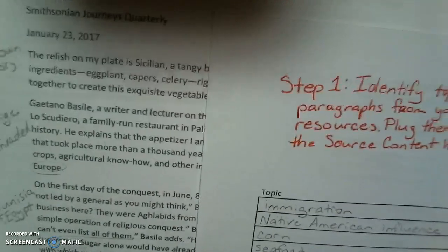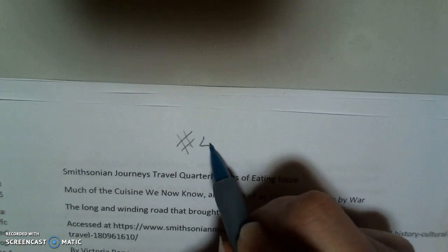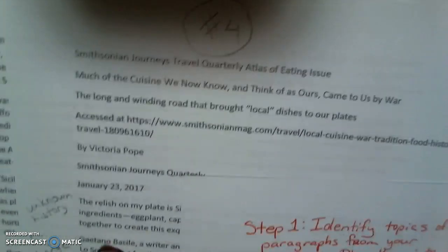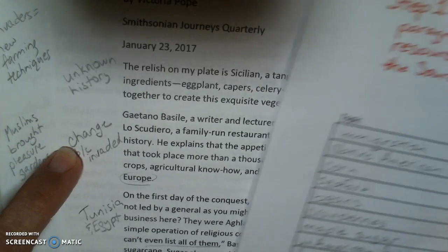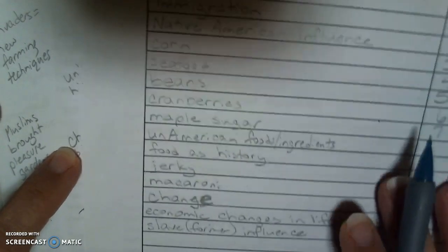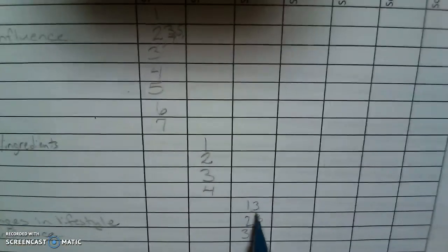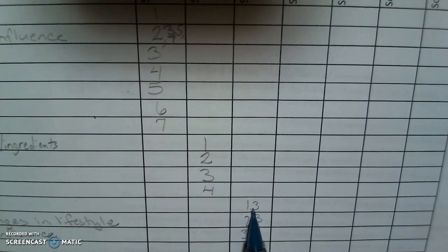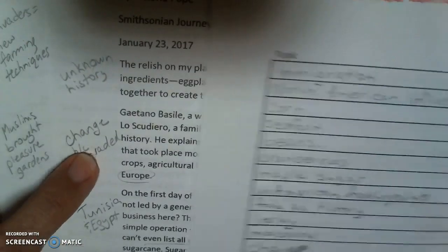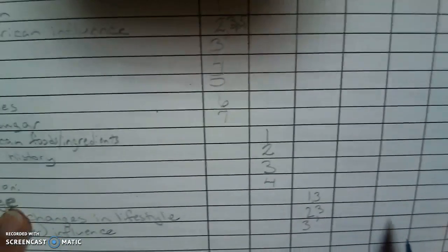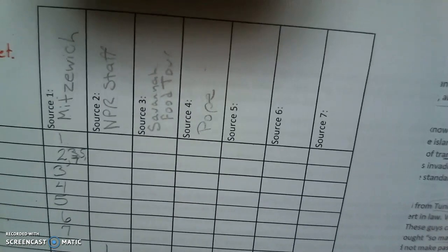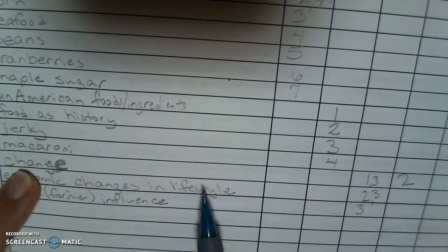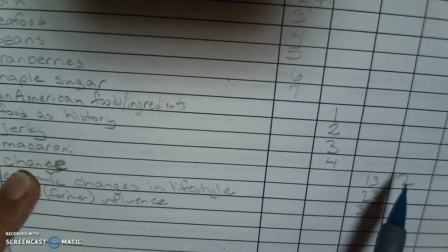There may be some things in here — remember this is source number four. On this one I have: unknown history. Here's change — remember we talked about change in the Savannah Food Tour article. So for Pope, paragraph one has unknown history, and paragraph two has change. I'm going to come over to change and mark Pope, paragraph two. It's a little hard to see because of the height to get it large enough on your screen, but hopefully you can follow that over and then up to source four.